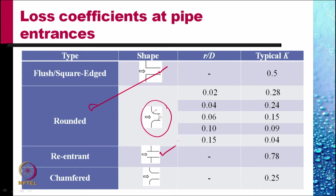For chamfered entrance, the value of k is 0.25.